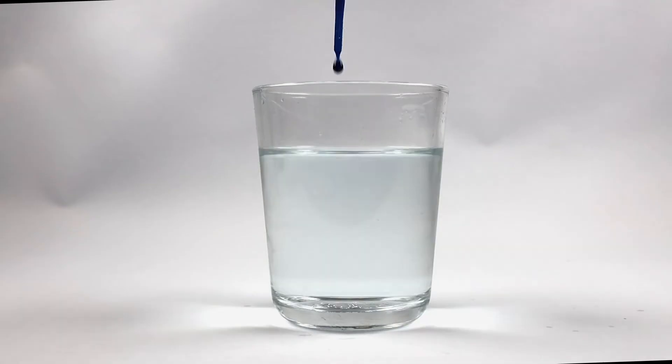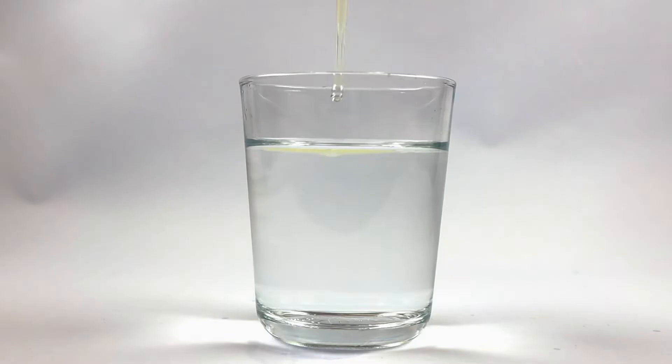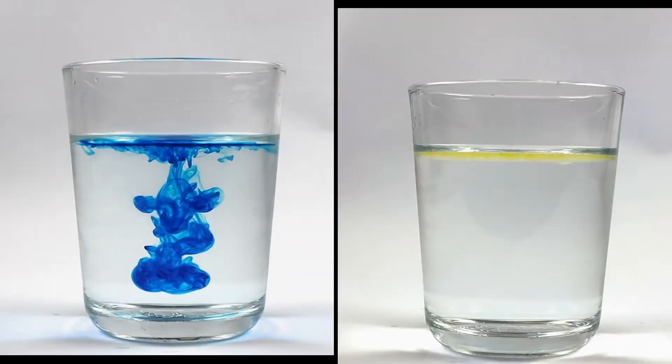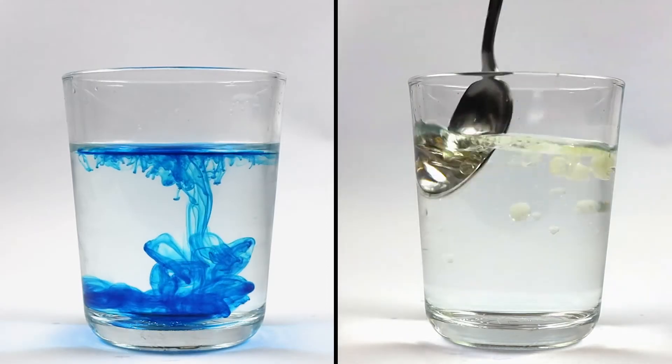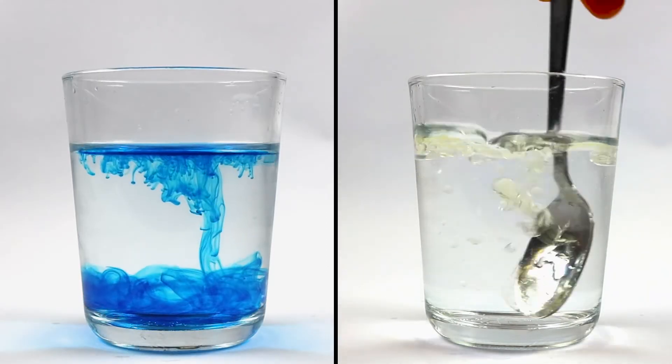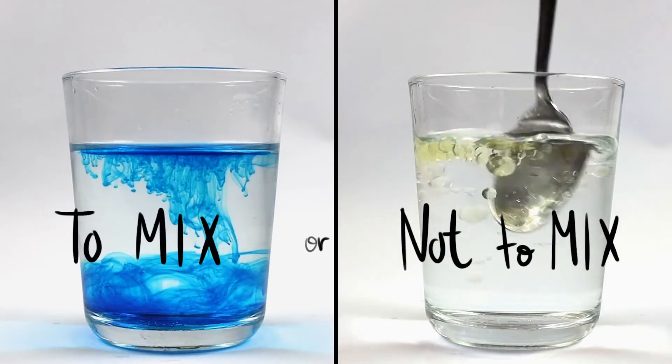Take a glass of water, pour an ink drop and wait. Now do the same with oil. Ink and water mix, but oil and water don't. We all know this. But why is that? What makes two liquids mix or remain apart?